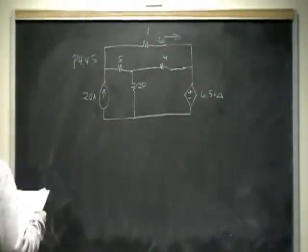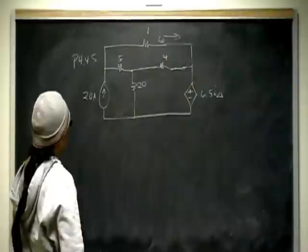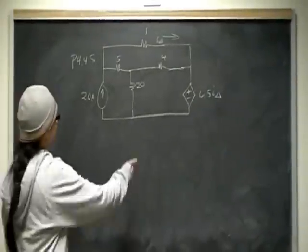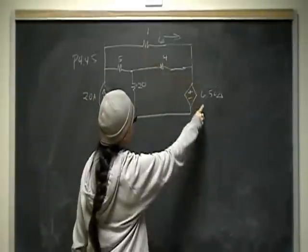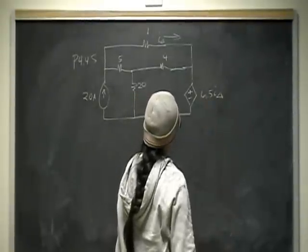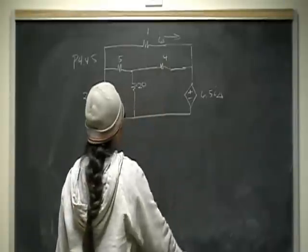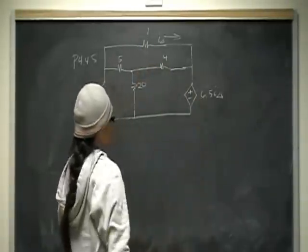And in this problem, we have a 20 amp independent current source, and this is 5 ohms, 24, 1, and a dependent voltage source, and that has value 6.5 I delta, so this current in this mesh controls the value of that voltage source.